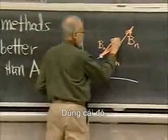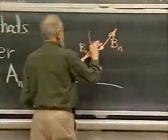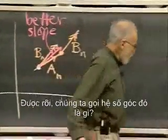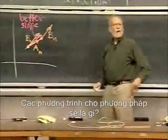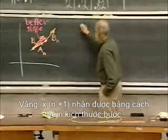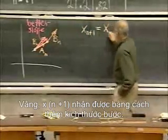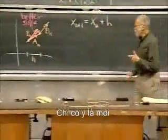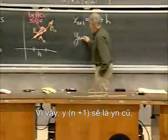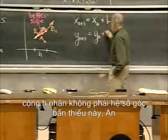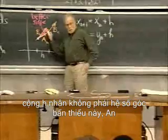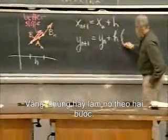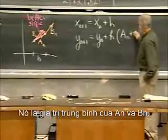In other words, use that instead — so this is our better slope. What will we call that slope? We don't have to call it anything. What would the equations for the method be? Well, X_{n+1} is gotten by adding the step size, just as it was before. The new thing is how to get the new value of Y. So Y_{n+1} should be the old Y_n plus H times — not this crummy slope A_n, but the better, the pink slope. The formula for the pink slope is the average of A_n and B_n.